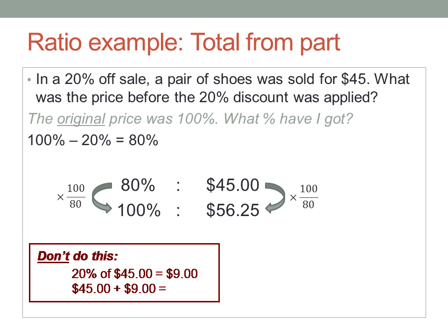20% of 45 is 9. 45 plus 9 is 54. Hmm, that's not the same as the $56.25 we got before, is it? Why not? Why didn't that work?